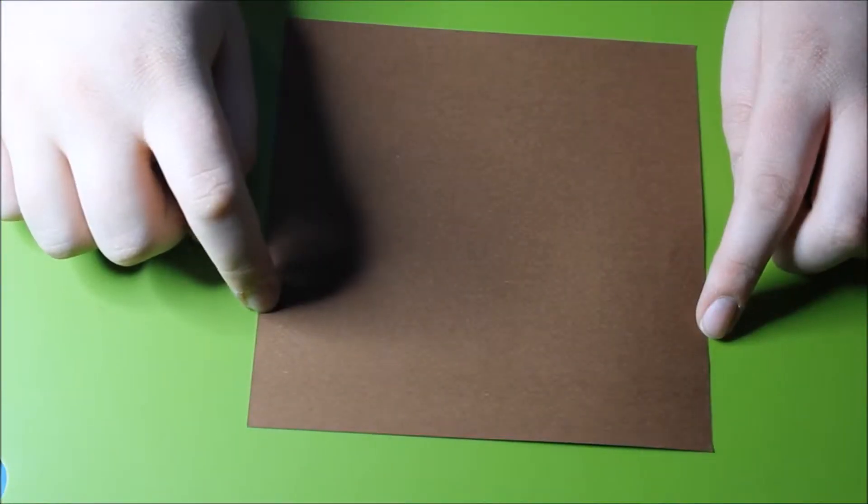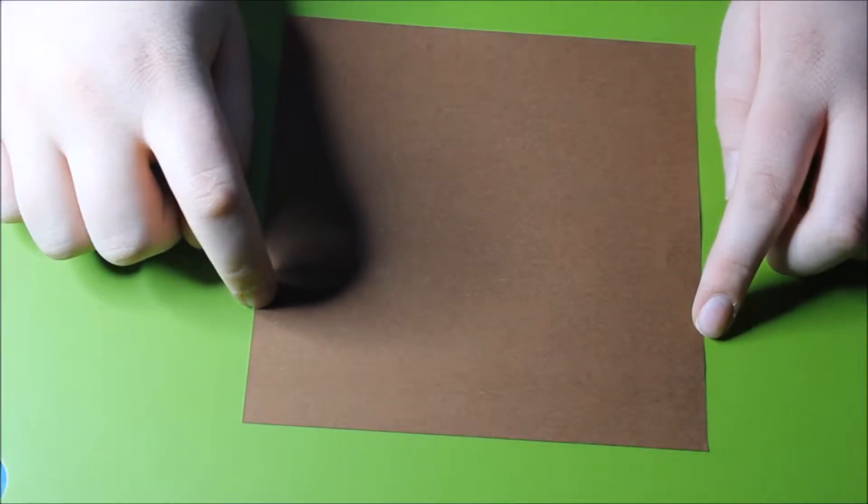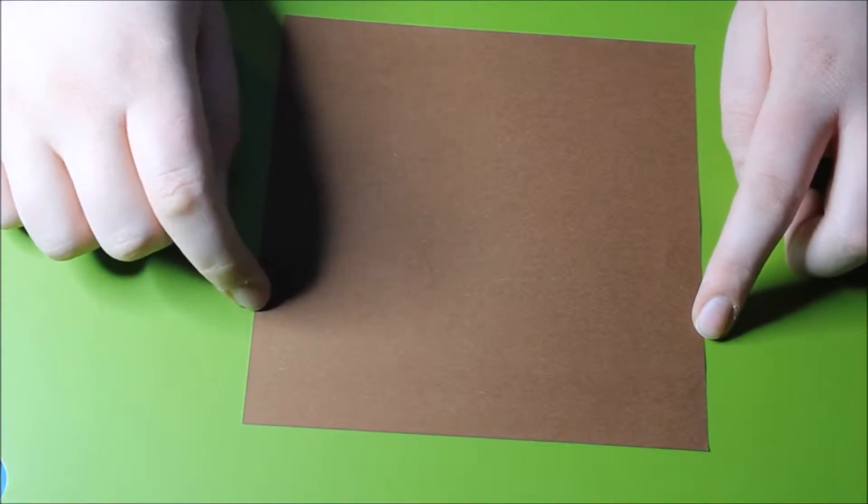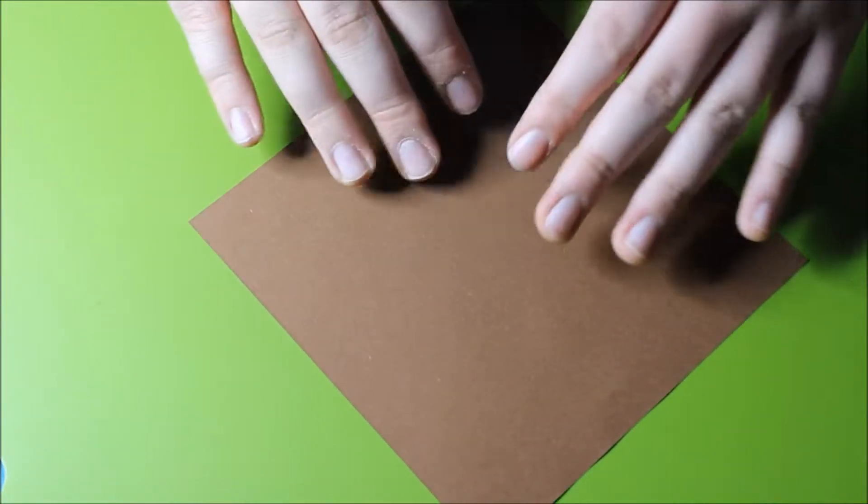Hi everybody! Today I'm going to be showing you how to fold an origami worm. Now this worm is a very simple model. You're just gonna need one square piece of origami paper.